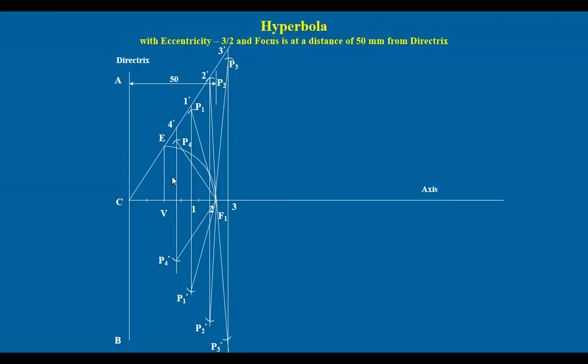Now once you get all these points, join them by a smooth freehand curve like this. You get the curve, this is the hyperbola. It is an open curve, and this is when you are given the eccentricity, this is the way of drawing.